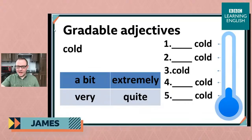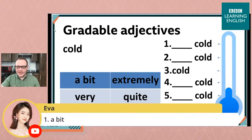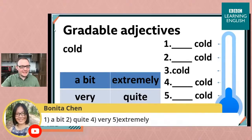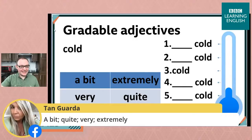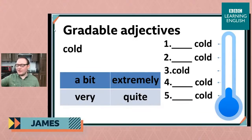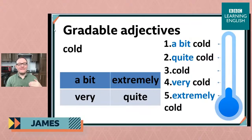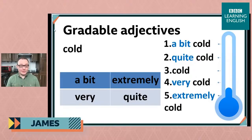So Ava says number 1 is 'a bit.' And Benita says: 1 = a bit, 2 = quite, 4 = very, and 5 = extremely. Agusiamal and Ramad and Tan all agree. Very good — well done everybody! You are absolutely correct. Number 1 is 'a bit cold.' Number 2 is 'quite cold.' Number 3 is just 'cold.' Number 4 is 'very cold.' And number 5 is 'extremely cold.' Excellent! These are the modifiers we can use with gradable adjectives like cold.